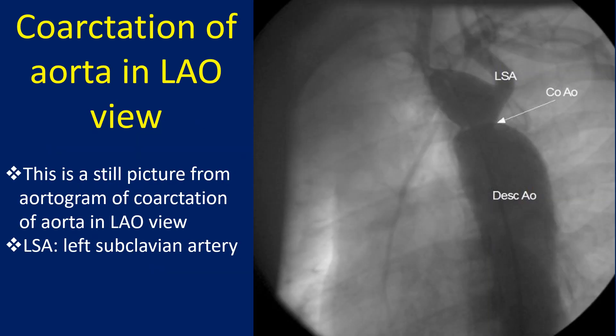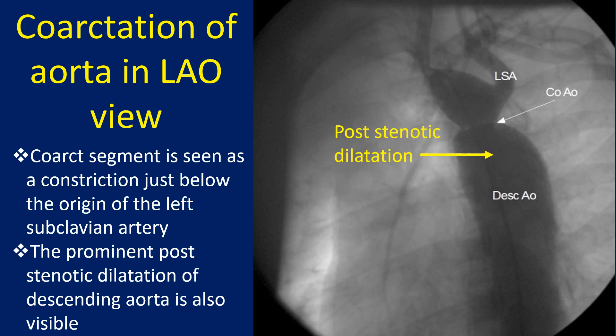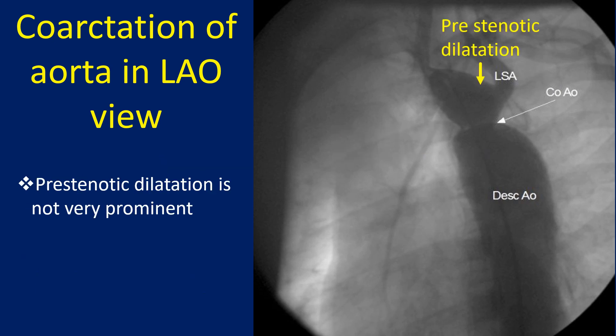This is a still picture from an aortogram of coarctation of aorta in LAO view. LSA indicates the left subclavian artery. The coarct segment is seen as a constriction just below the origin of the left subclavian artery. The prominent post-stenotic dilatation of the descending aorta is also visible, while pre-stenotic dilatation is not very prominent.